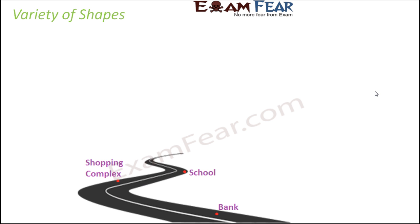Let's look at some examples where we encounter shapes in our day-to-day life. Let's say somebody asks you where your school is located and how far it is from the shopping complex and from the bank. When you are sitting at home, you take a map or a sheet of paper, draw the road roughly, and then point out the location of your school using a dot.